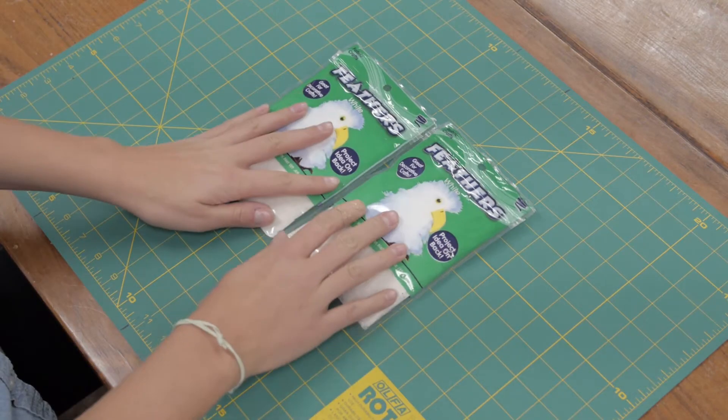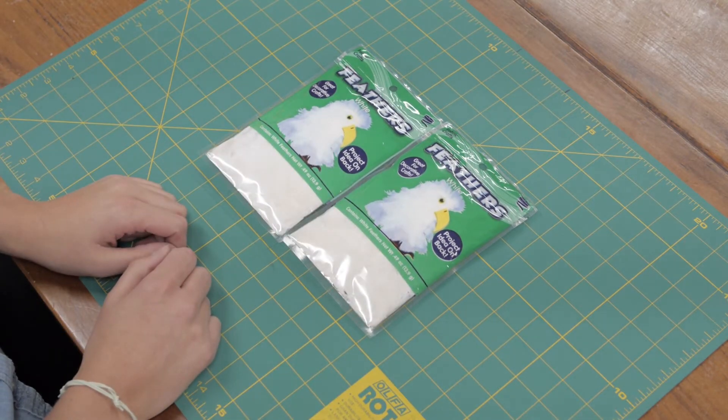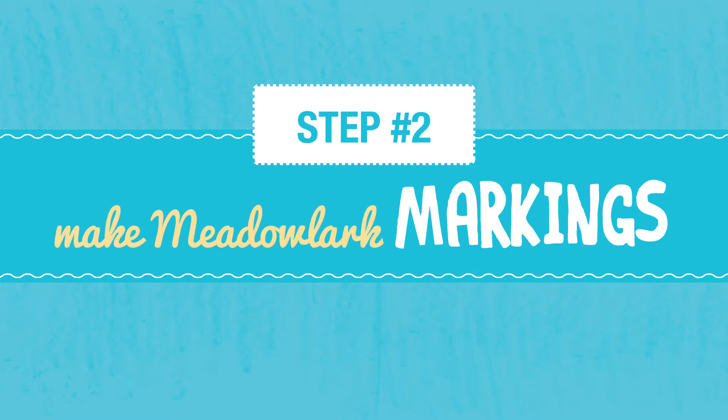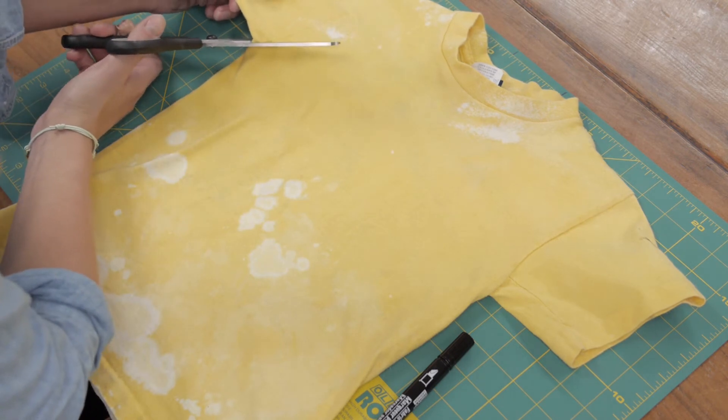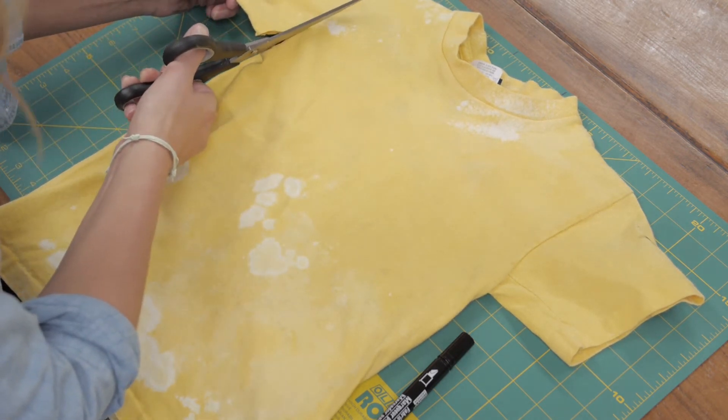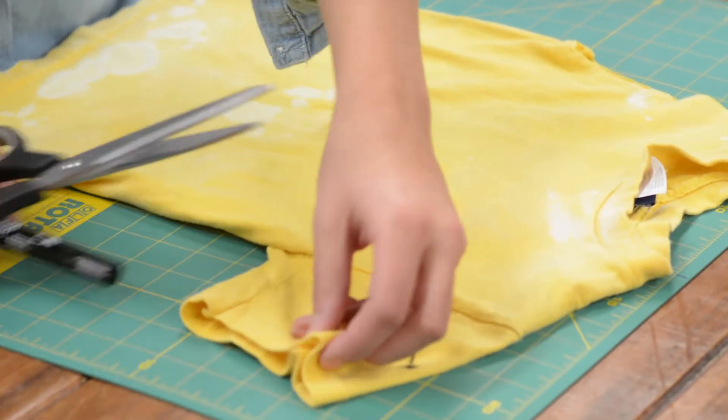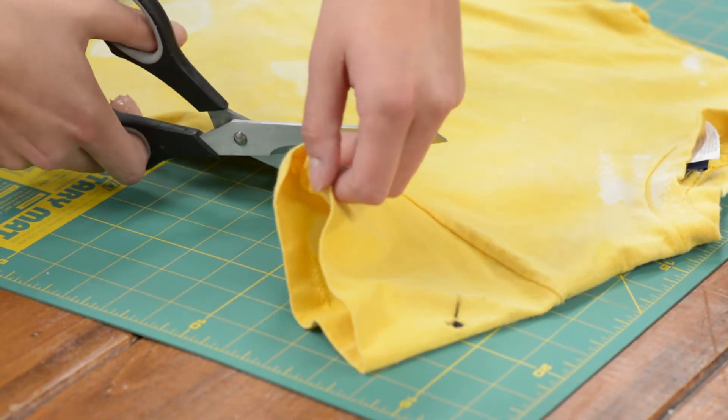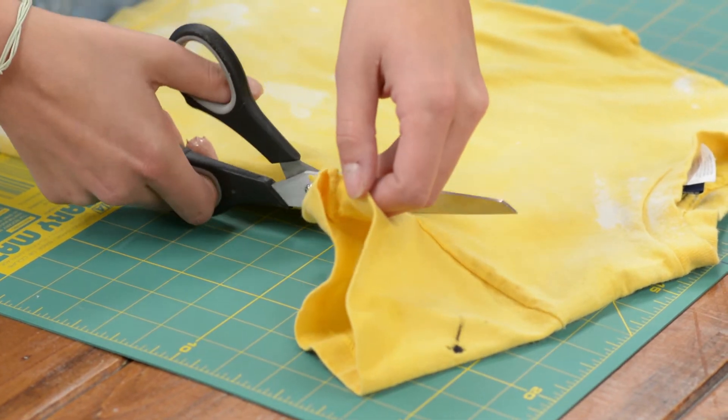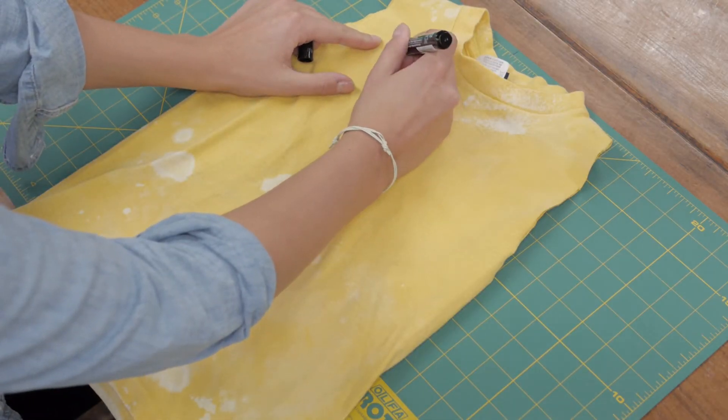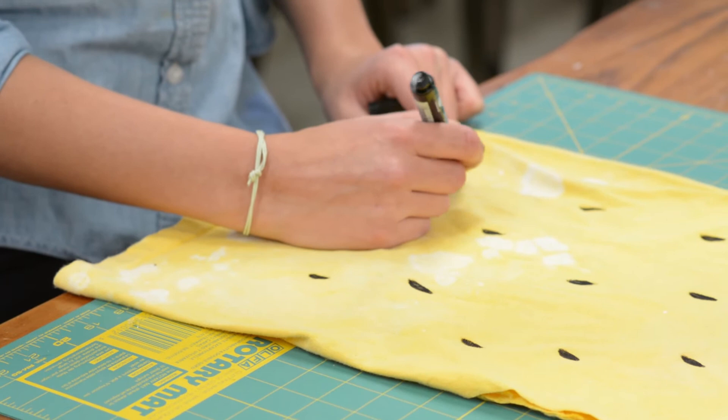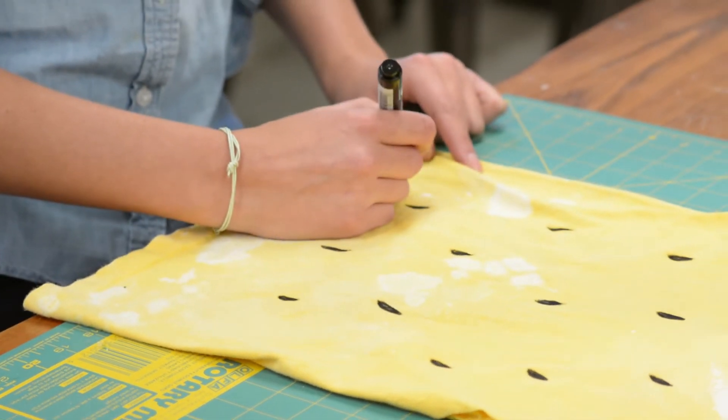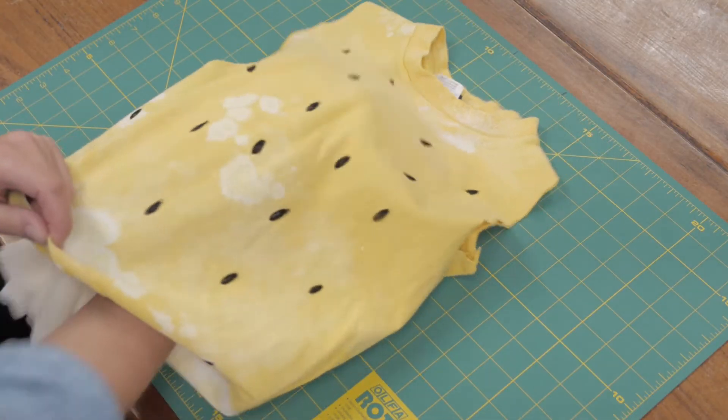You'll also need a sheet of cardboard and a pack or two of white feathers. First, take the yellow shirt and cut off the arms. Next, take a fabric marker and draw on the meadowlark markings. Take a look at your calendar to get a good idea of what Pepper's markings look like. When it's all put together, the yellow shirt will cover the long sleeve shirt.